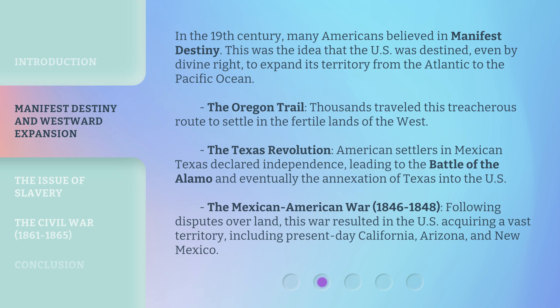The Texas Revolution: American settlers in Mexican Texas declared independence, leading to the Battle of the Alamo and eventually the annexation of Texas into the U.S. The Mexican-American War, 1846 to 1848: following disputes over land, this war resulted in the U.S. acquiring a vast territory, including present-day California, Arizona, and New Mexico.